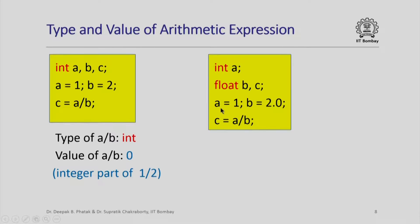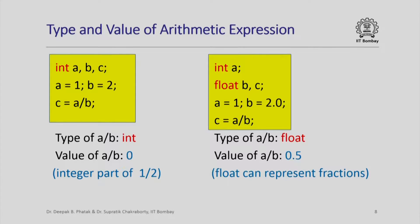On the other hand, in this program where a is integer and b and c are float, a is assigned 1 and b is assigned the floating point constant 2.0. When we compute a divided by b, the type of this expression has to be float because one operand is float, and therefore the value of a/b can be 0.5 because float can represent fractions.